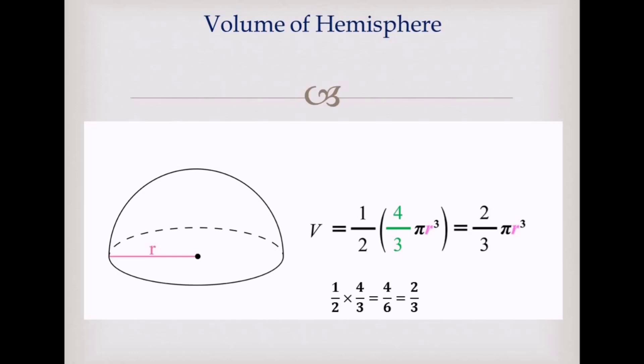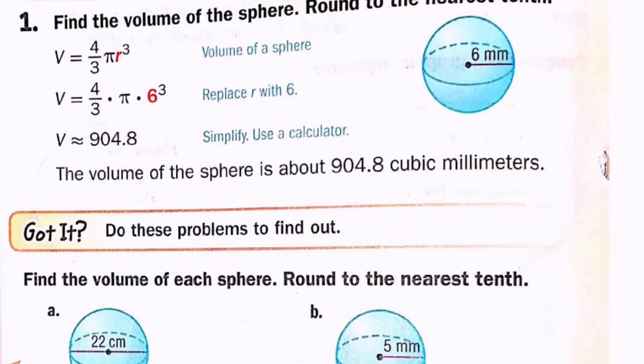Now let's take an example. Find the volume of the sphere, rounded to the nearest tenth. First of all, I need to write the formula: volume of a sphere equals 4 over 3 × pi × r³. That is the first step — write the volume formula.